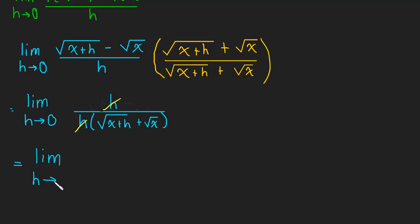This is the limit as h approaches zero of one divided by the square root of x plus h plus the square root of x. And now we're at a point where we can plug that zero in for h. So let's go ahead and do that. So one divided by the square root of x plus the square root of x, which is just equal to one divided by two times the square root of x.